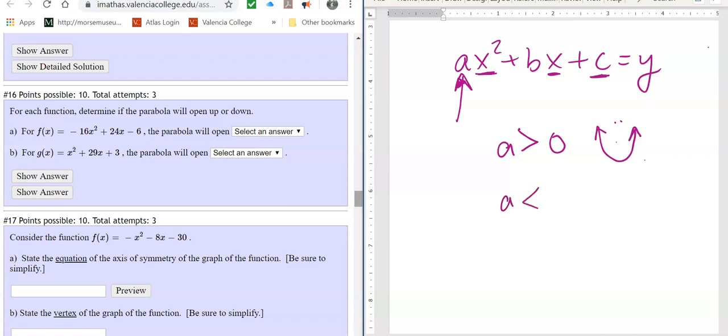If a is less than zero, those are negative numbers, so negative people are sad, right? Parabola opens down.